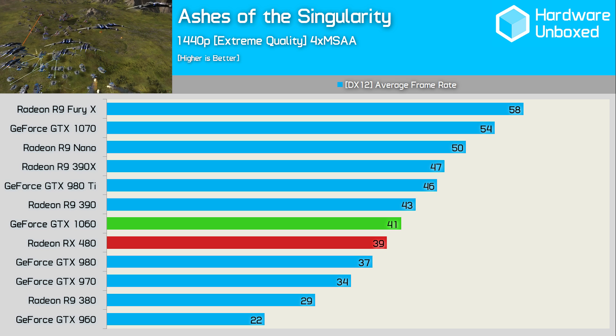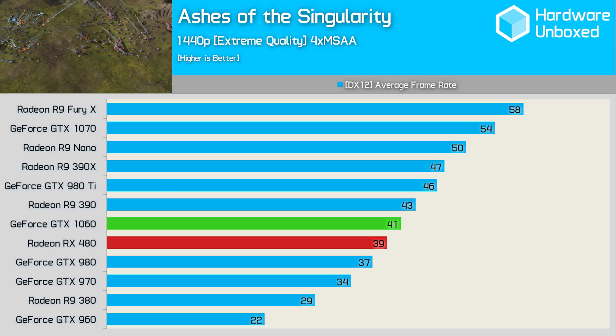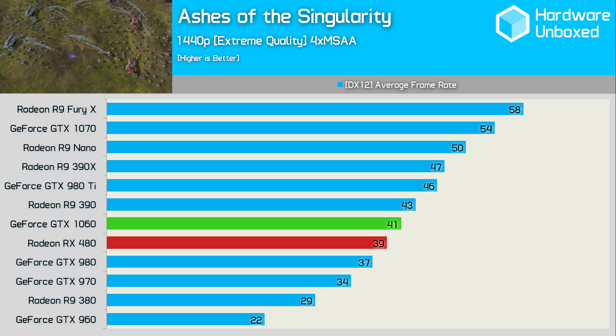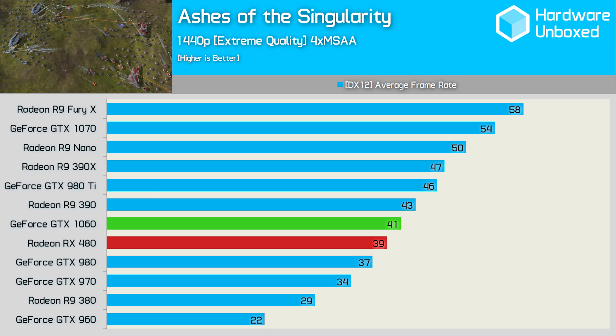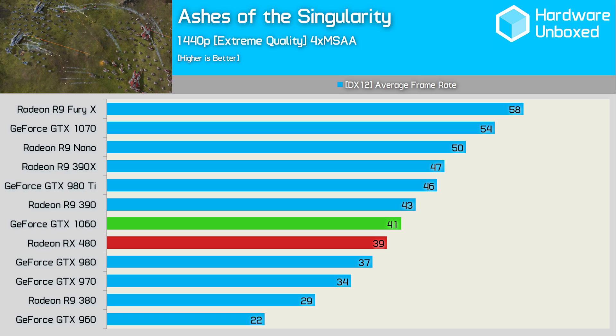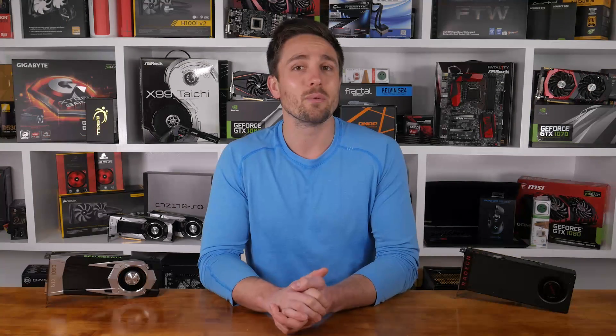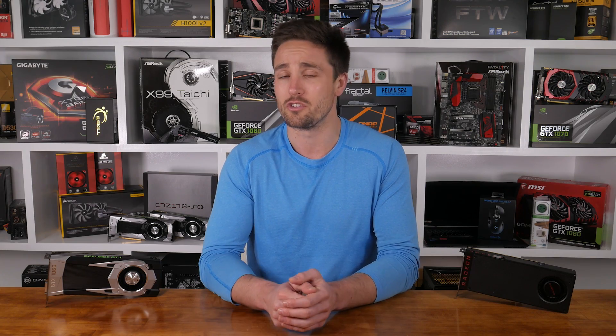Moving to DirectX 12, we find a rather different story. The GTX 1060 is still faster than the RX 480, but only just, while the 480 does beat both the 980 and 970. The Nano, however, is now considerably faster than the 1060, and even beats the 980 Ti. The odd thing is we go from one extreme to the other. Running on DirectX 11, the AMD cards are much slower than they typically are in other titles, then with DirectX 12 they're much faster than you would expect — the Fury X, for example, beats the GTX 1070. Basically, AMD has made no effort to optimise their drivers for DirectX 11 performance in Ashes, while the game itself has been heavily optimised for AMD's GCN architecture. So the results from this one game make it difficult to draw any real conclusions.